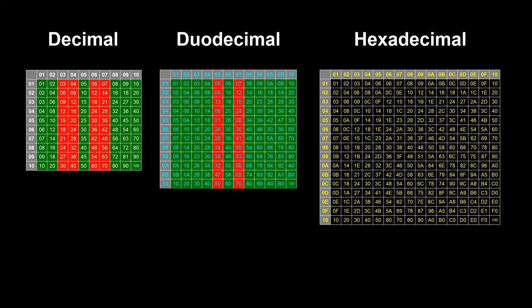If we counted in duodecimal instead of decimal it would make learning the times tables a lot easier. It would also make counting in threes, fours and sixes a lot easier. The only times table that is easier to remember in decimal than in duodecimal is the 5 times table, however the 3, 4 and 6 times tables are all more useful than the 5 times table.